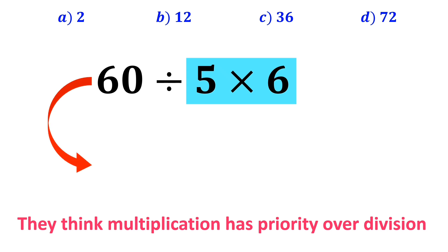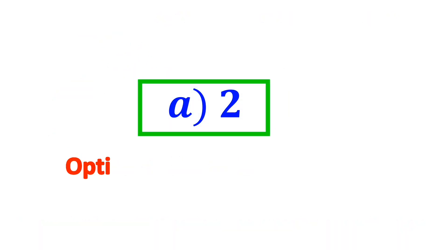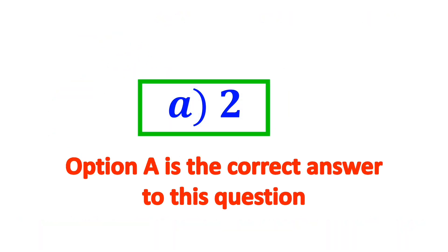So, this expression simplifies to 60 divided by 30, which finally gives them the answer 2. And immediately, they say that option A is the correct answer to this question. But it's completely wrong.